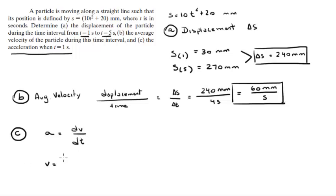The derivative of 10T² + 20 with respect to time comes out to be v = 20T.